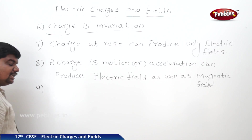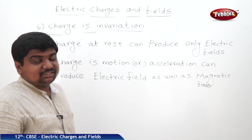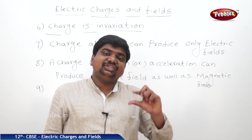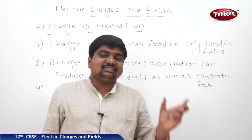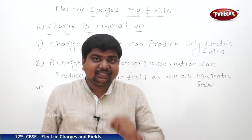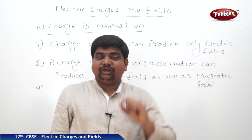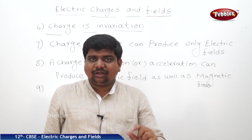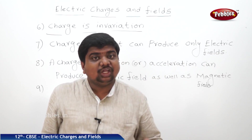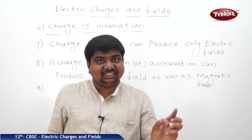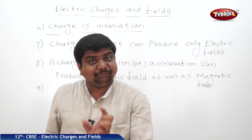What is the ninth property of the charge? Charge can be distributed over the surface of a body, along the length of a body, or over the volume of the body. This is said of charge is distributive.